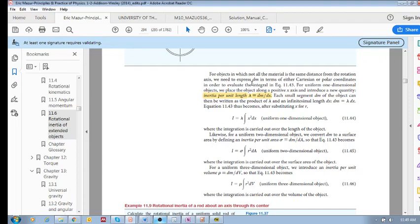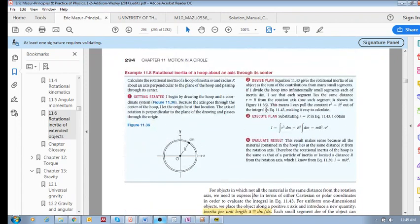In previous examples for determining rotational inertia, we saw that the little mass segments around the object were all situated at the same radius. So we could take that radius